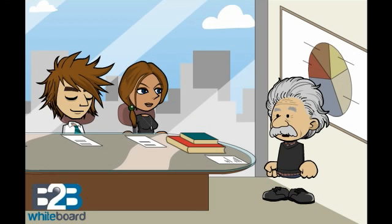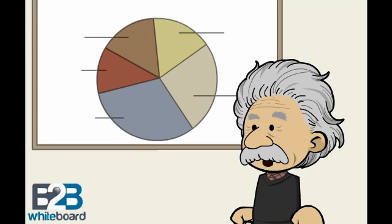Well Sara, the bullwhip effect, or whiplash effect, is an observed phenomenon in forecast driven distribution channels. It refers to a trend of increasing swings in inventory in response to changes in demand, as one looks at distribution channel intermediaries further back down the supply chain for a product.